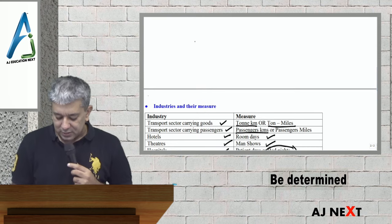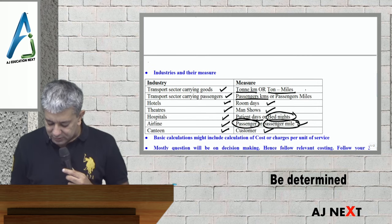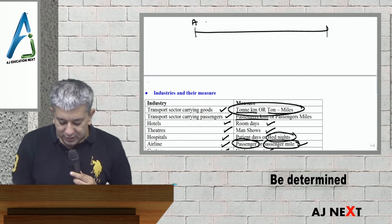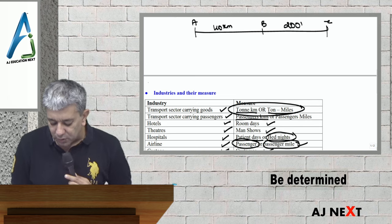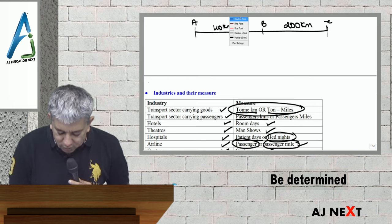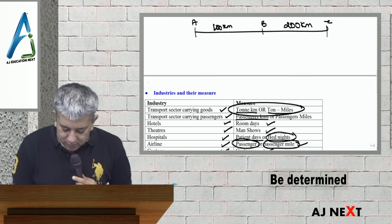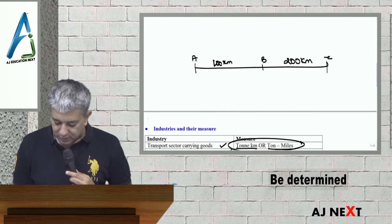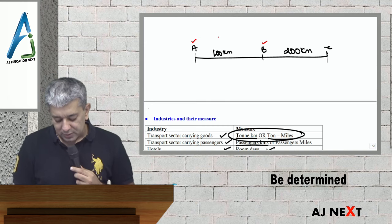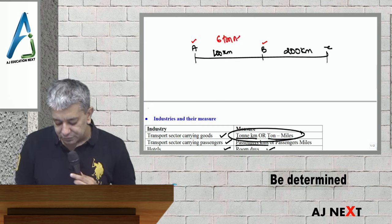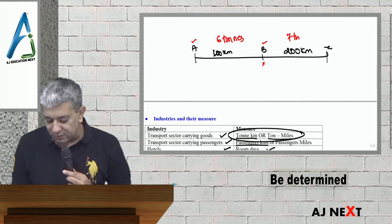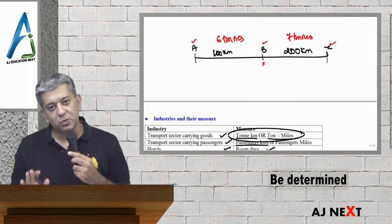Let me give you one example of how to compute number of ton-kilometers. Suppose city A hai, beech mein B aata hai, aur yahan C hai. Suppose A to B 100 km hai, B to C 200 km hai, toh in all A to C 300 km hai. Jo truck hai A to B chala, six tons carry kar raha tha. Station B tak pehuncha, ek ton offload kar diya, do ton aur le liya. So therefore, seven tons lekar wo C tak pahunch gaya. Yeh sara ka sara goods C par utar diya.